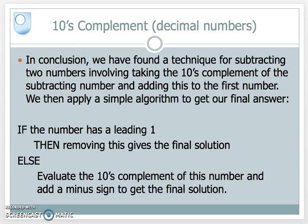In conclusion, we've found a technique called the 10's complement technique for subtracting two numbers in the decimal (denary) system. We apply an algorithm: if the leading digit is a 1, remove it — that gives the final solution. If it's not a 1, we take the 10's complement of the number and add a minus sign to get the final solution.